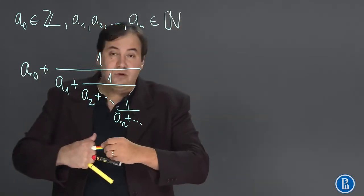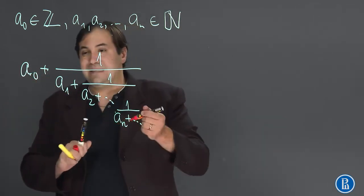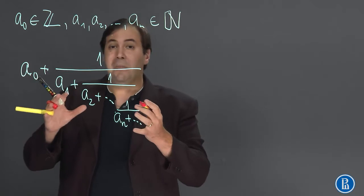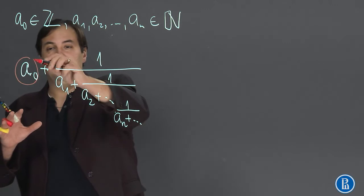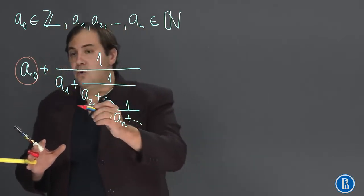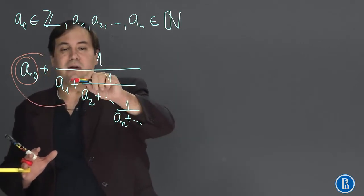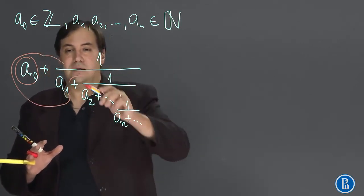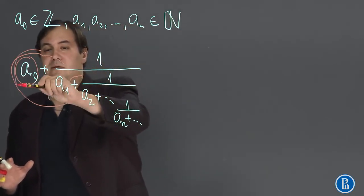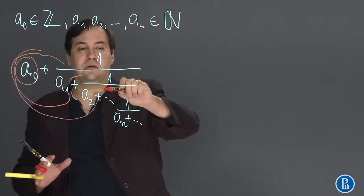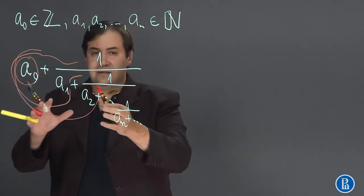In order to get closer to the value of such an expression we can consider parts of this expression. For instance a0 is simply an integer or a0 plus 1 over a1 is a rational number or we can consider the first three floors. It is also a rational number.